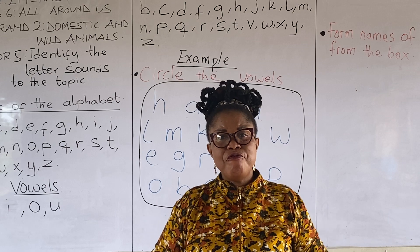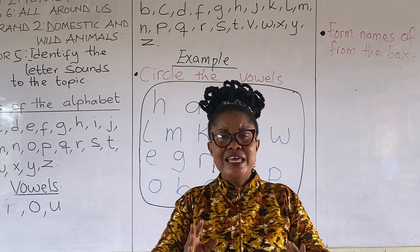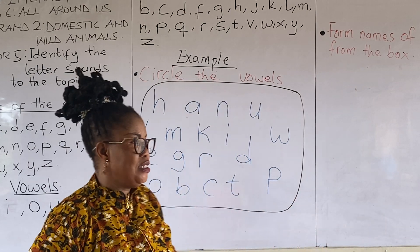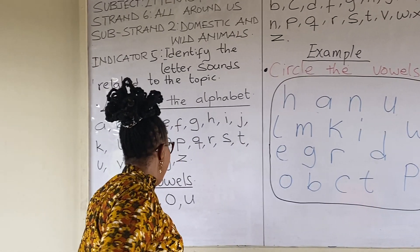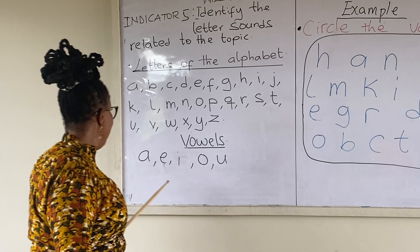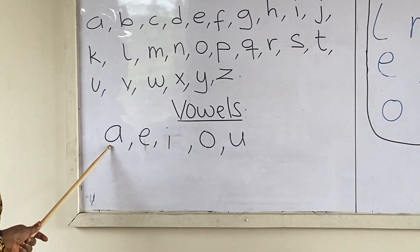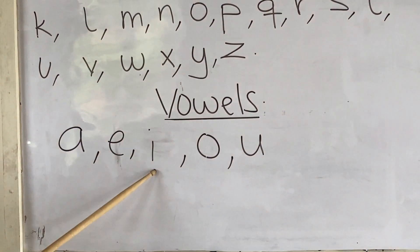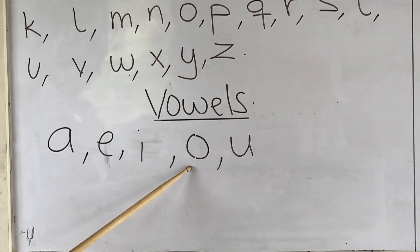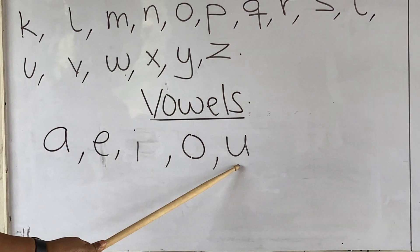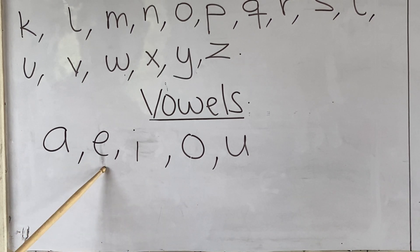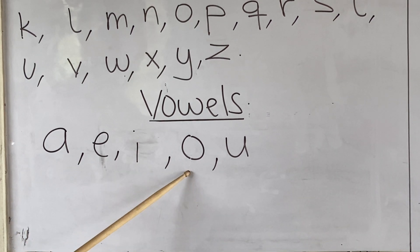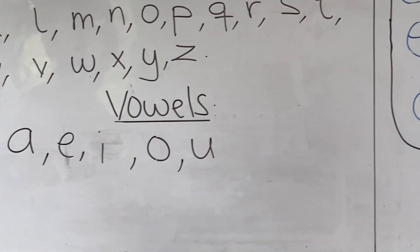Let's look at the vowels within the letters of the alphabet. The vowels are A, E, I, O, U. A, E, I, O, U.